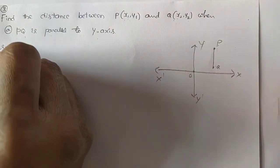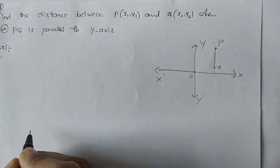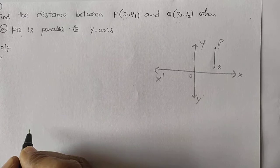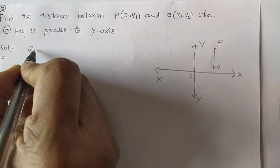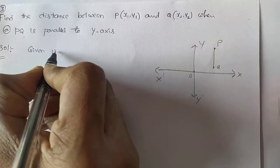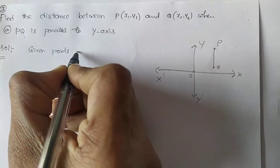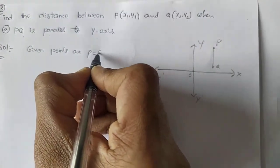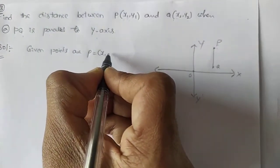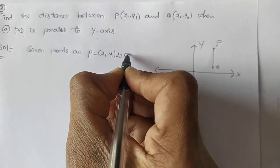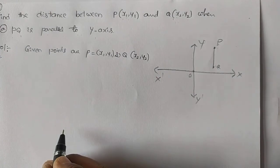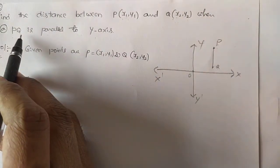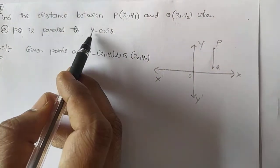Solution. Given points are P(x1, y1) and Q(x2, y2). Since PQ is parallel to y-axis, what is the condition?